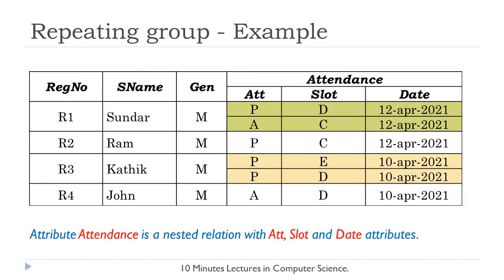In this example, the attribute attendance is a repeating group stored in the form of a nested table — that is, a table within a table. This nested table stores information about attendance details like whether a student attended or not, the slot, and the date, for every student, every slot, and every date. Hence, based on the number of classes attended, a student will usually have many records, and because of this repeating group of values the table is not in first normal form.